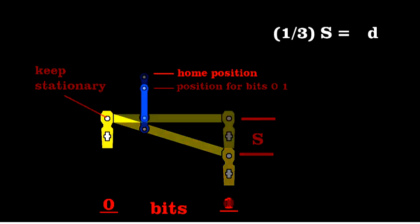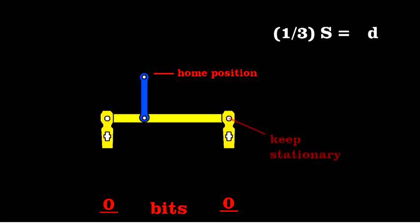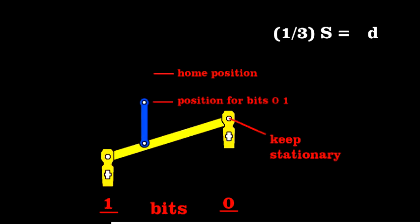To encode bits one-zero, keep the right pivot fixed and pull on the left tab. You can again find the distance that blue bar moved using similar triangles. It's two-thirds of the stroke length s, or in our notation, 2D. We'll call that position two.